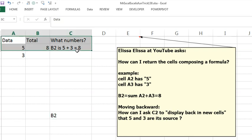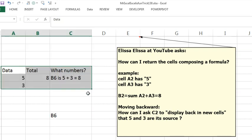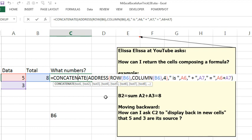Now if I change this, move it down here, it'll say B6, or wherever it is, B6 is 5 plus 3 equals 8, alright, throw it back to MrExcel.